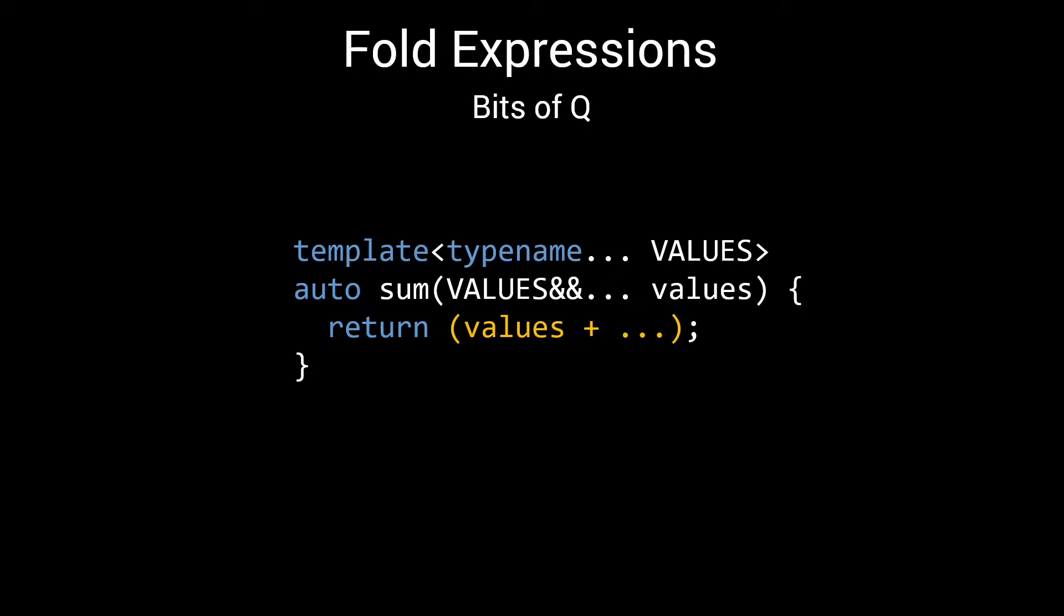If we call SUM with the parameters 1, 2, 3, and 4, these will become the values in the values parameter pack. The yellow fold expression repeats the plus operator for each of the values in the parameter pack.